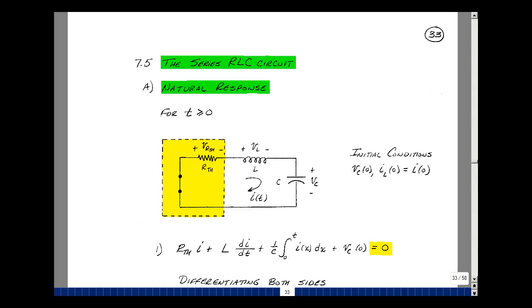This lesson deals with the natural response of a series RLC circuit. You can find these notes in the ECE 201 e-book in Chapter 7, starting on page 33.